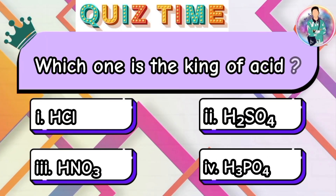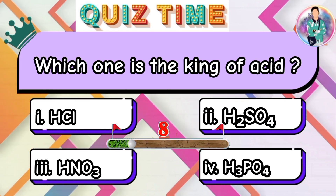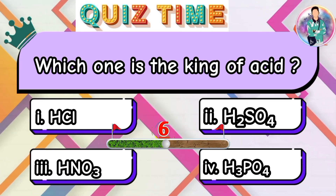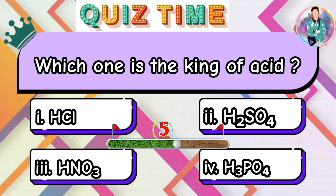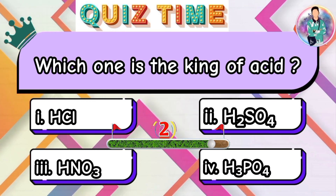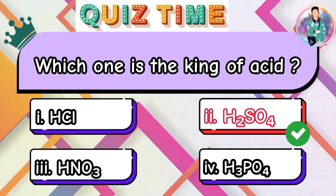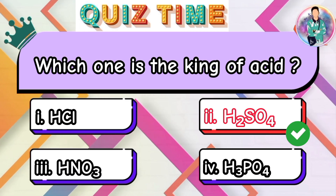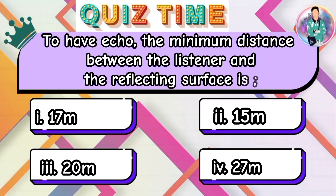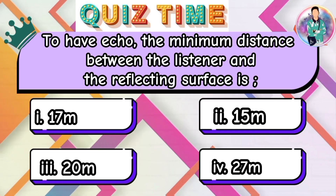Which one is the king of acids? To have an echo, the minimum distance between the listener and the reflecting surface is?